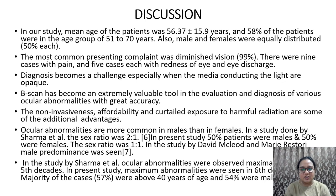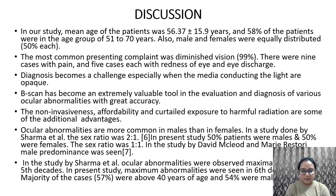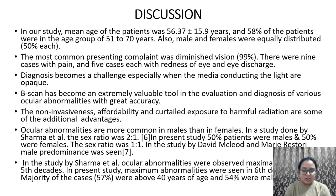Discussion: In our study, the mean age of patients was 56 years and 58% were in the age group of 51 to 70 years. The most common presenting complaint was diminution of vision at 99%. The diagnosis becomes a challenge especially when the media conducting light are opaque. B-scan has become an extremely valuable tool in evaluating various ocular abnormalities with great accuracy. Non-invasiveness, affordability, and curtailed exposure to harmful radiation are additional advantages. Ocular abnormalities are more common in males; in the study by Sharma et al., the sex ratio was 2:1, but in our study males and females were equally distributed at 50% each. The study by David McLeod and Mary Ristori also showed male predominance.